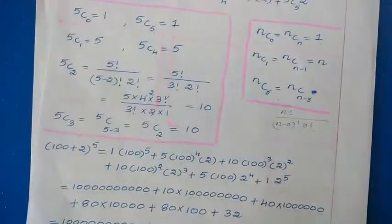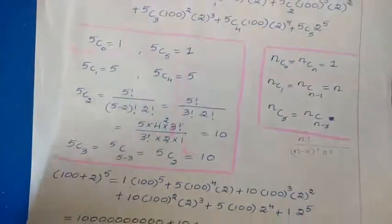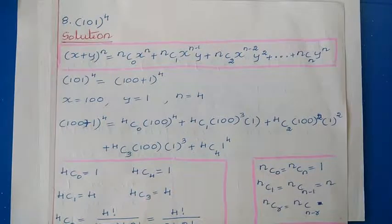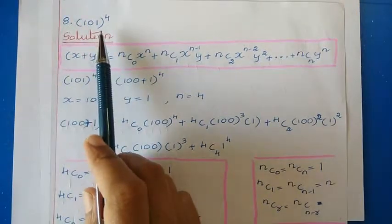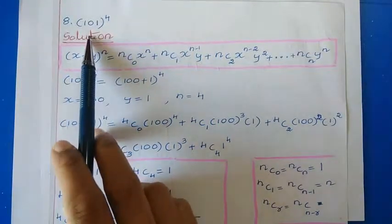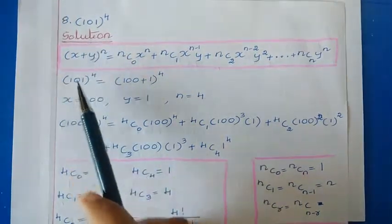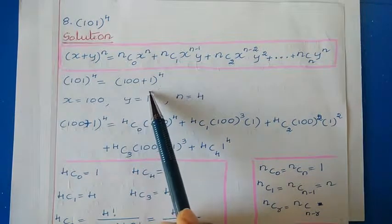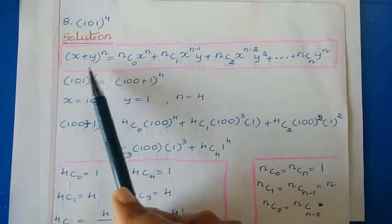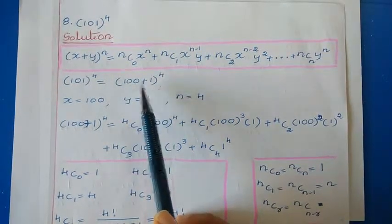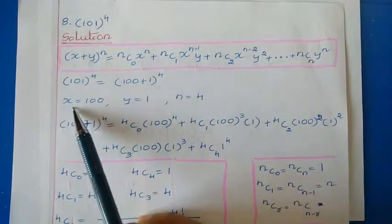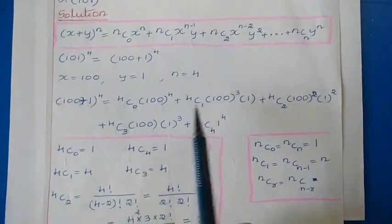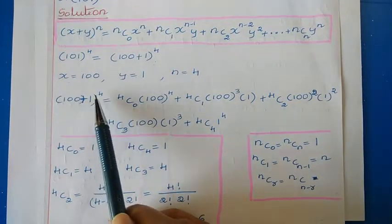Question number 8 is 101 to the power 4. We write 101 as 100 plus 1, so we apply the binomial theorem x plus y to the power n. Comparing, x is 100, y is 1, and n is 4. Let us write the binomial theorem expansion for 100 plus 1 to the power 4.